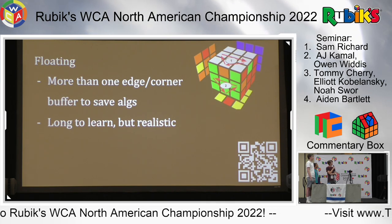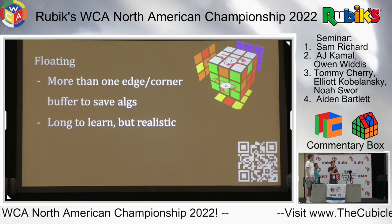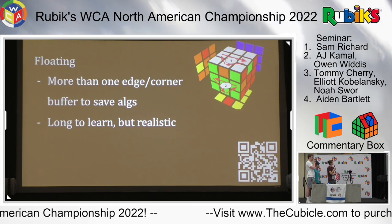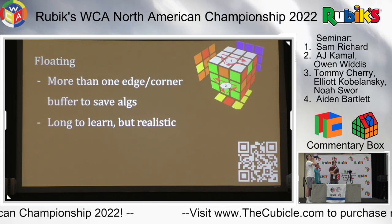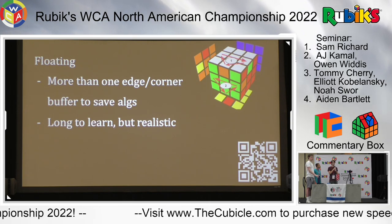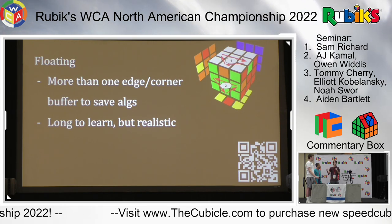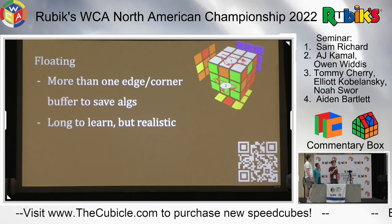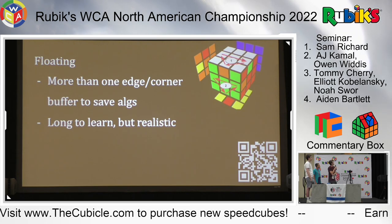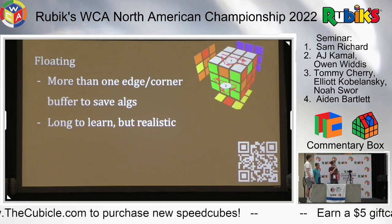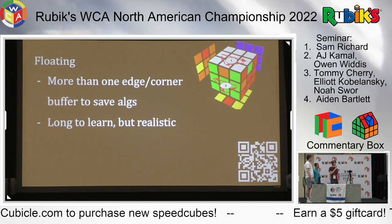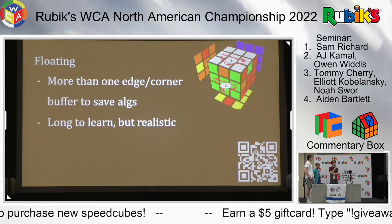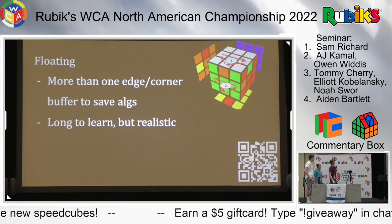Instead, notice that on the front layer there's just one U-perm left. Why not just do that one U-perm to finish the solve? That's essentially what floating is. While it may seem like a lot to relearn every three cycle from every buffer, every time you learn an additional buffer the next set gets smaller because you don't have to cycle to one you already know - and once you know how to learn three cycles, they become a lot easier for your brain to process.